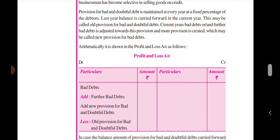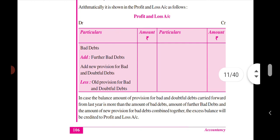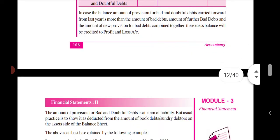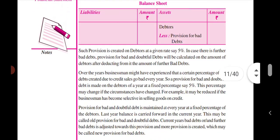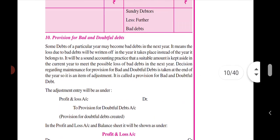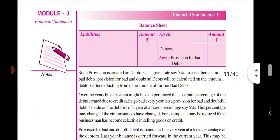The profit and loss account is charged with bad debts from the trial balance, and further bad debts are also added. We can add a couple more points: this means the new provision for bad debts, and the old provision for bad and doubtful debts — you already know the old provision, which is credited. If the new provision is more than the old provision, the difference is debited. Now the adjustments are clear. We will go to the problems. Thank you.